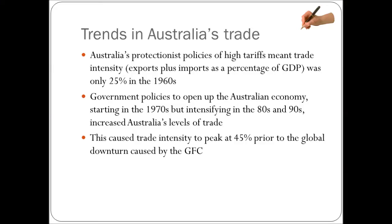Trends in Australia's trade: Australia's protectionist policies of high tariffs meant trade intensity — exports plus imports as a percentage of GDP — was only 25% in the 1960s. This tells you where we were, why it changed, and what that has led to. Trade intensity reached 45% prior to the GFC.